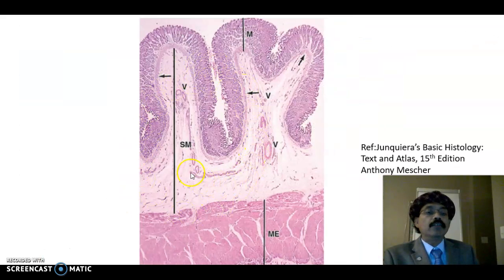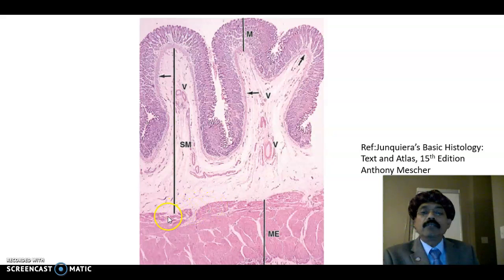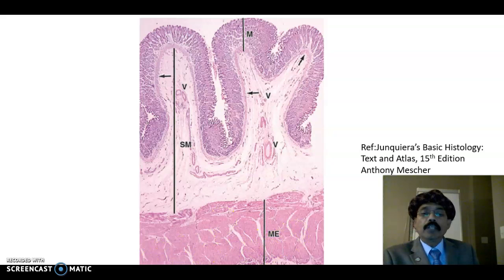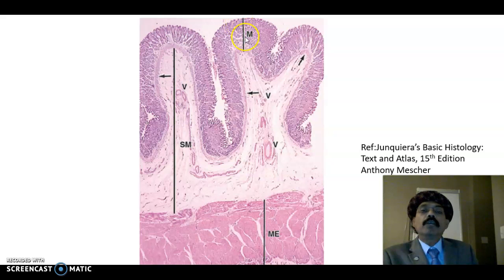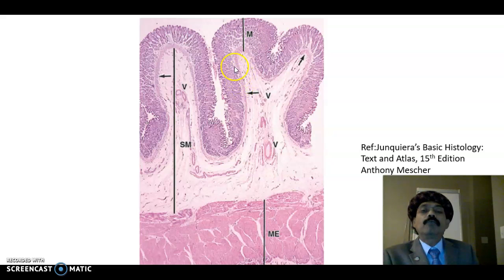This is a slide of stomach at low magnification. From here to here we have the mucosa, and this is the submucosa. This is the muscularis externa oblique muscle layer, then the circular muscle layer, and we get the longitudinal muscle layer. Outside there we get the serosa, lined by simple squamous epithelium or visceral peritoneum. The mucosa has three components: the lining epithelium, which is simple columnar epithelium, then the lamina propria that contains all these glands, and then the muscularis mucosa.